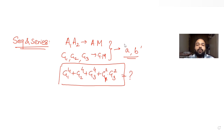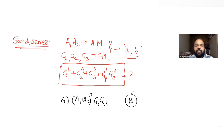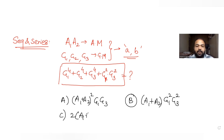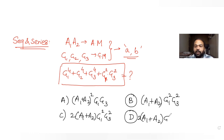There are four options given to us. The first option is (a1 + a2)² times g1·g3. The second option is (a1 + a2) times g1² times g3². The third option is 2 times (a1 + a2). We need to figure out which of the following options is correct.